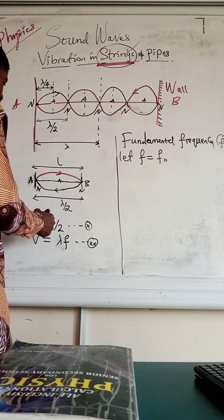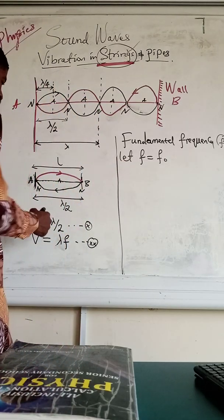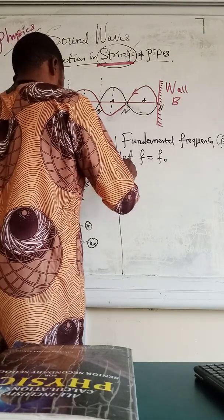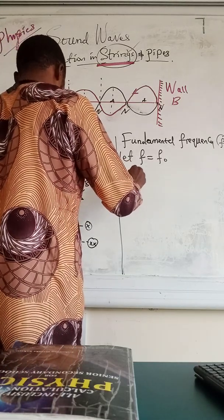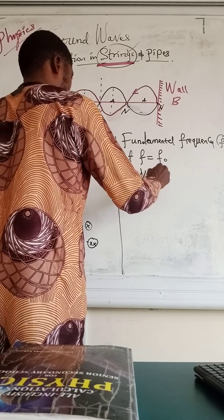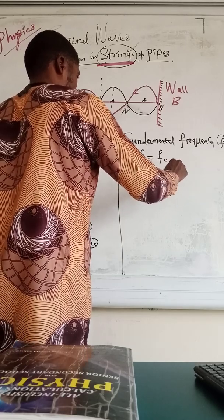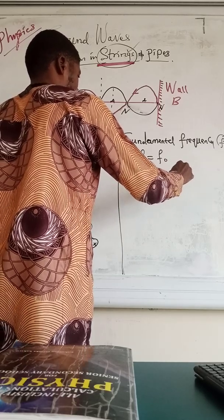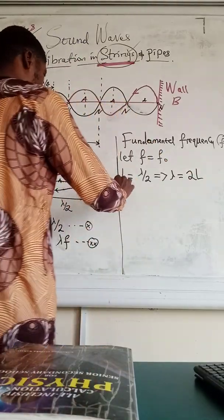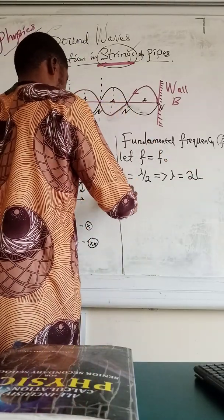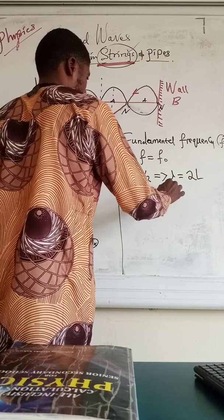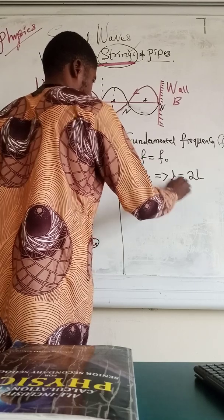From equation star, make lambda the subject of the formula. We have L equals lambda over 2, which implies that lambda equals 2L. We call this equation star star star.